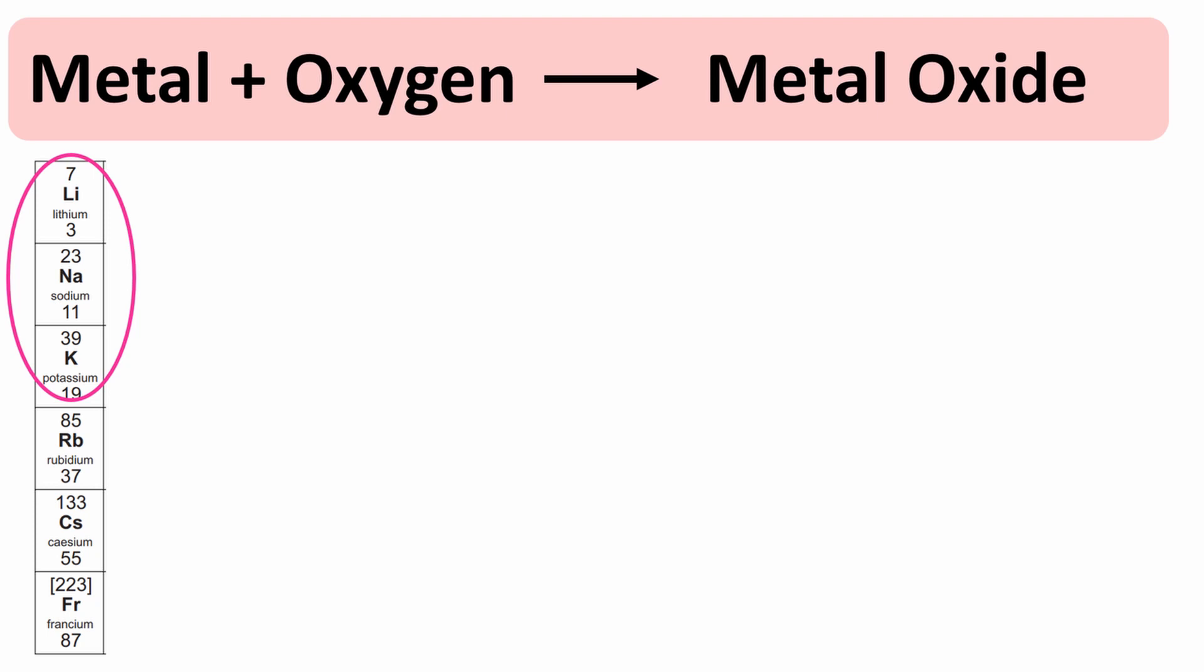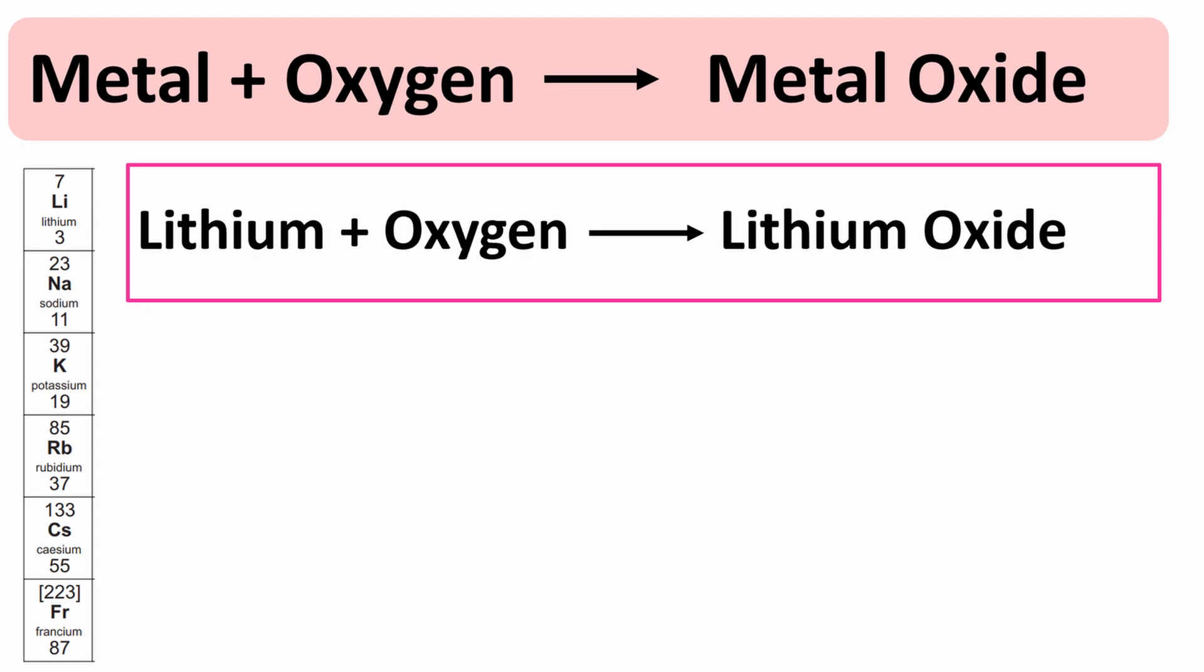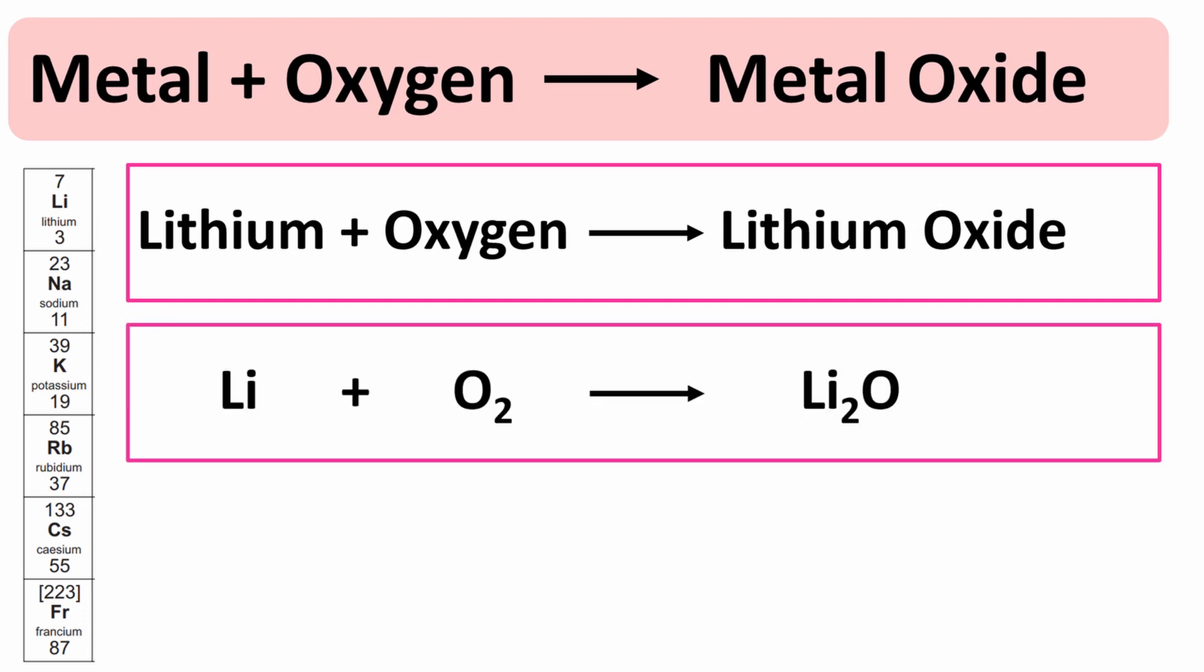So let's start with the first one, lithium. The word equation is lithium plus oxygen forms lithium oxide. The symbol equation is Li plus O₂ makes Li₂O.